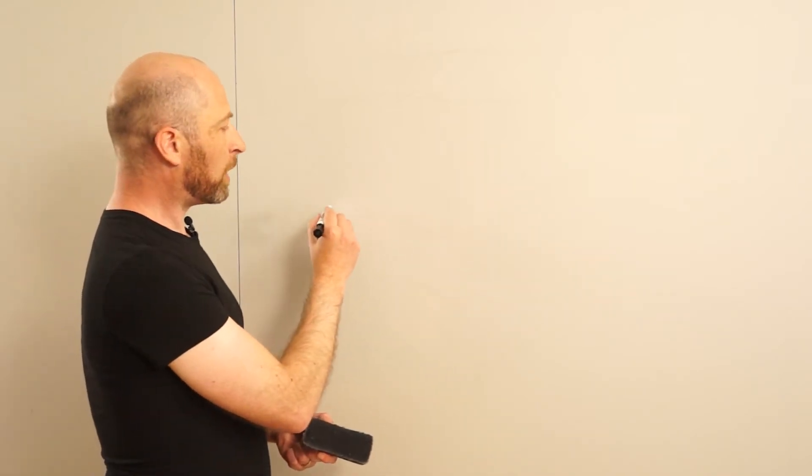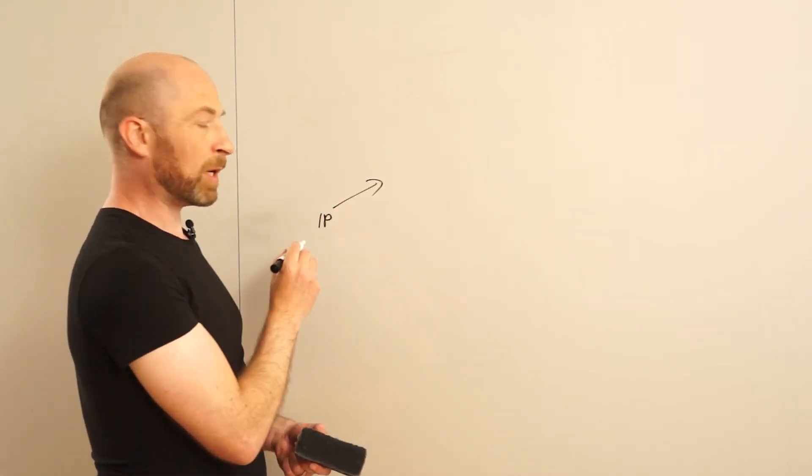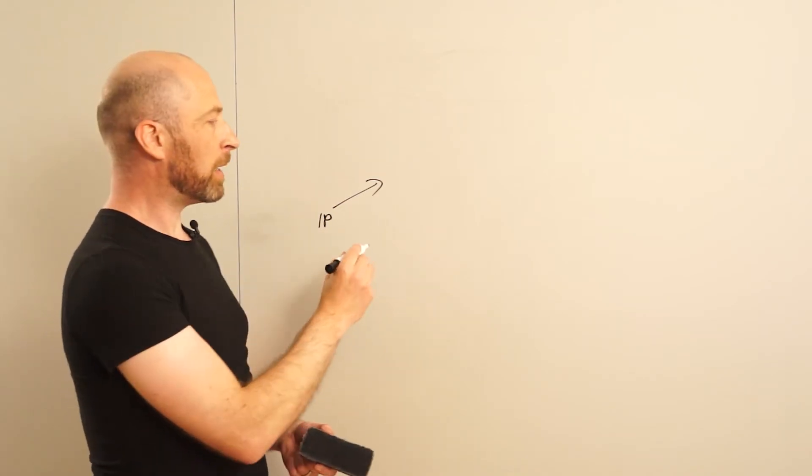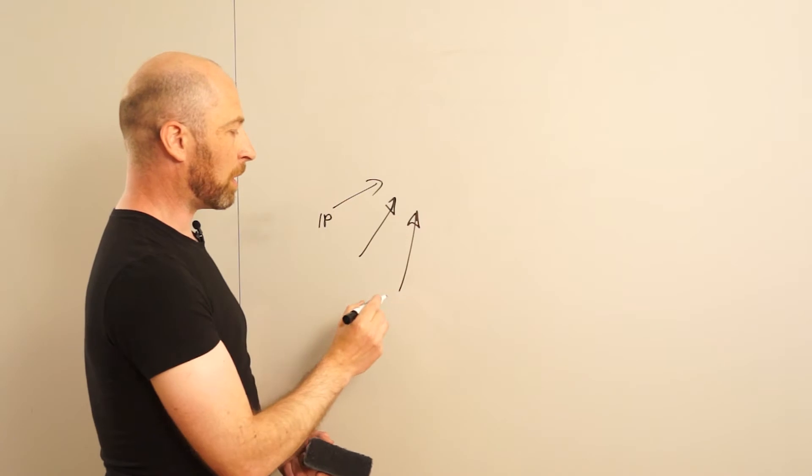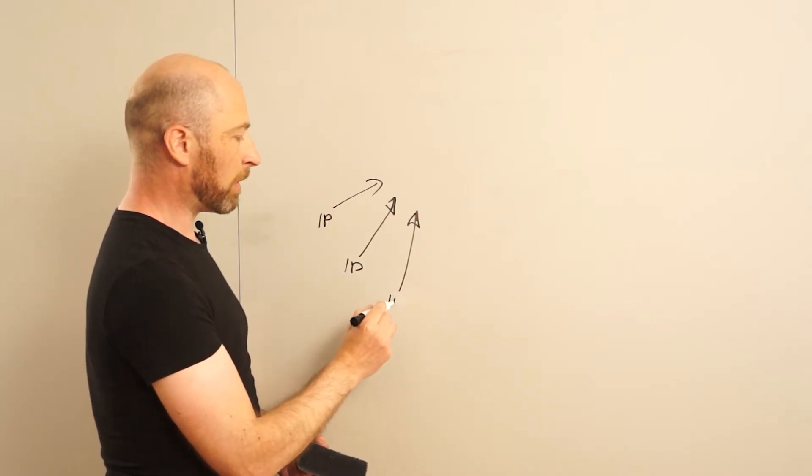So one of the things that Cloudmark does when we're trying to help companies that host open redirectors, we give those companies information about how they're being abused. So one of the things that we can give them, for example, is what are the IP addresses. An IP address is just an address on the internet that are being used to create the abuse on these redirectors.